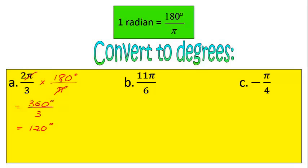Same thing for this one. You can stop the video and just try these on your own if you want to see if you can do it on your own. If not, follow along with me. So we get 11π divided by 6 times 180 degrees over π. Those πs cancel out.